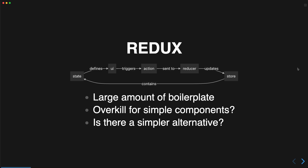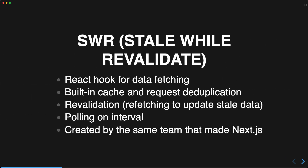The issue with Redux is that there is a large amount of boilerplate — each one of those boxes in the diagram is code you have to write. So is this overkill for simple components? If you just need a simple component to display some data from the server, do you really need all of that?